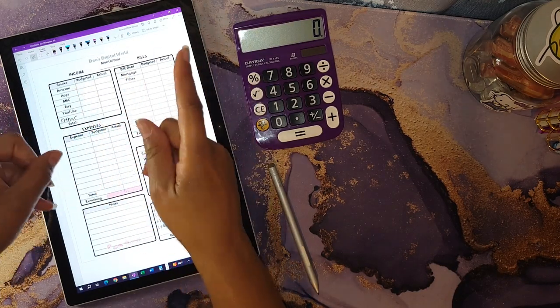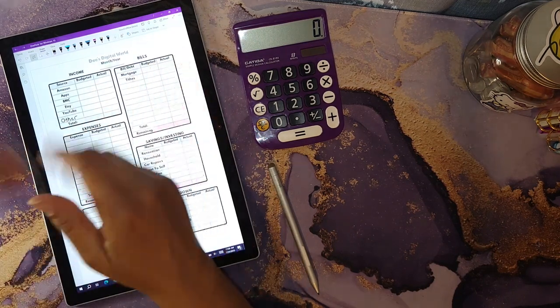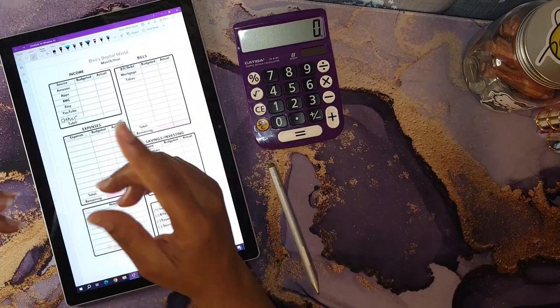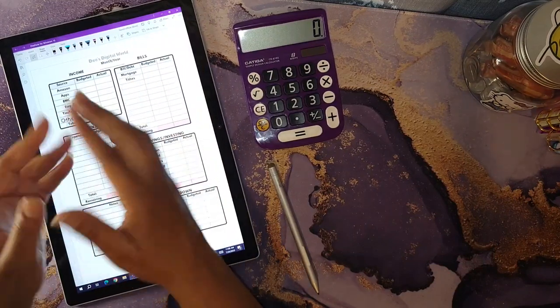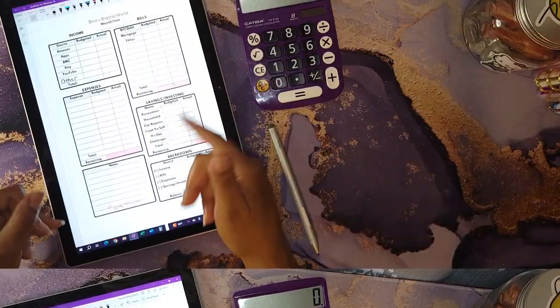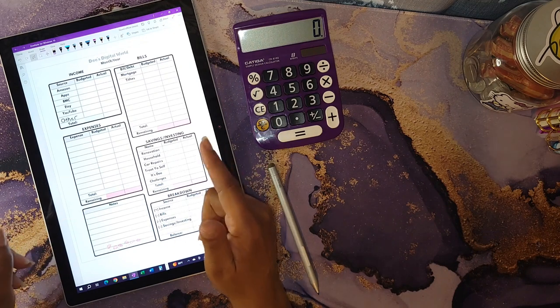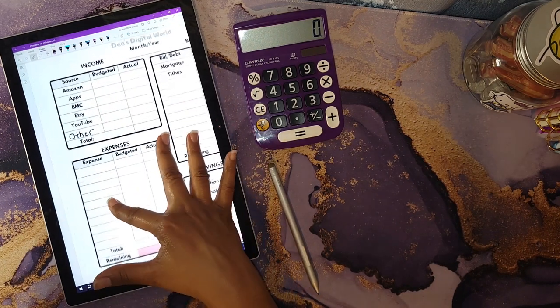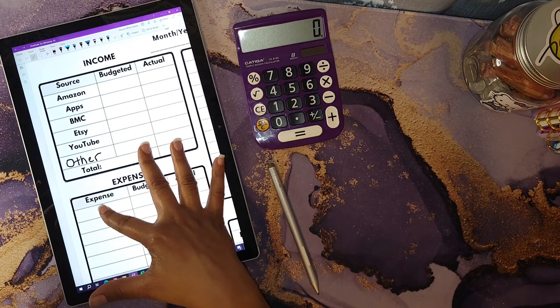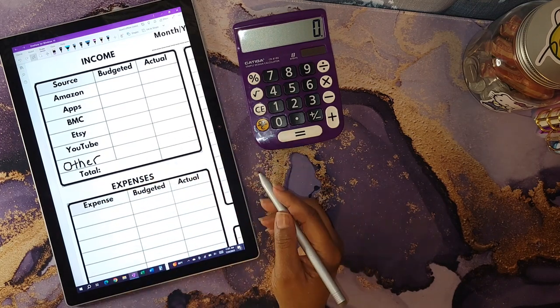Hey, let's get into this side income budget for the month of July. If you want to see what I was able to earn with my Etsy brand and various apps that I use on my phone, let's hop into it and see what I was able to earn. For my side income, I do not budget any money for it, so I just fill in the actual column on my planner.